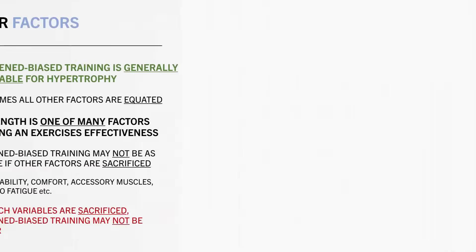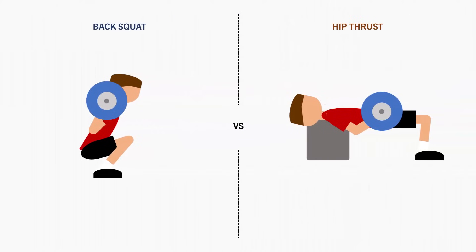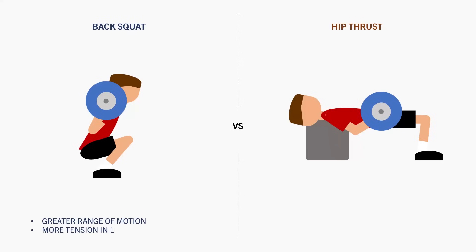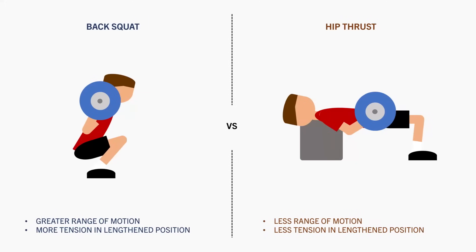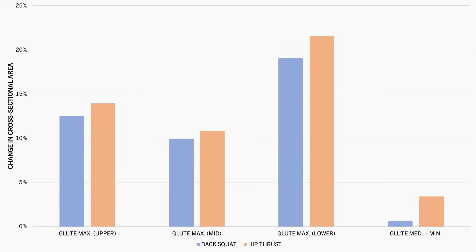For example, this study compared the back squat versus the hip thrust on lower body muscle growth. The squats take the glutes through a little more range of motion and involve more tension in the lengthened position, while the hip thrust probably takes the glutes through slightly less range of motion with less tension in the lengthened position. Although it was found that the glute max experienced similar increases in muscle cross-sectional area from both exercises, despite the squats being more lengthened biased.